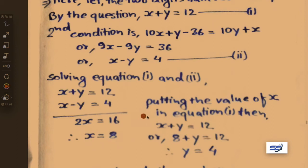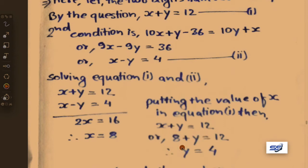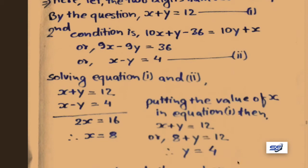Putting the value of x in equation 1: 8 plus y equals 12, therefore y equals 4. In this way we get x equals 8 and y equals 4.